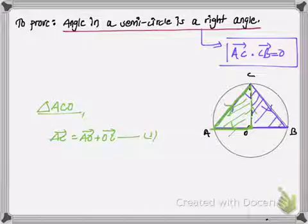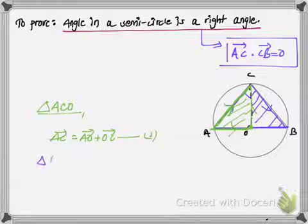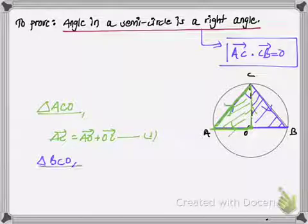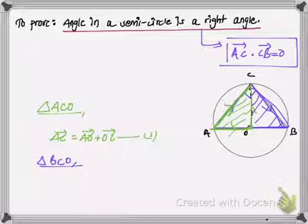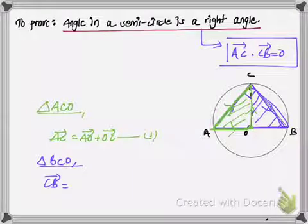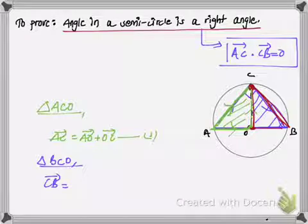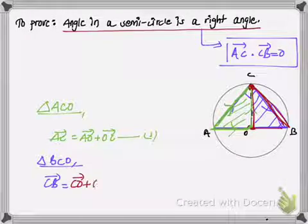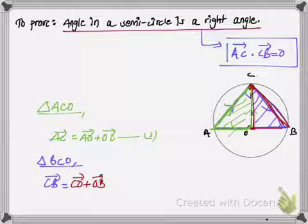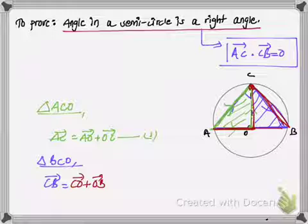Now I'll take the other triangle, triangle BCO, and consider side CB. Moving from point C to B is the same as moving from point C to O and then from O to B. So for vector CB I can write: CB = CO + OB.